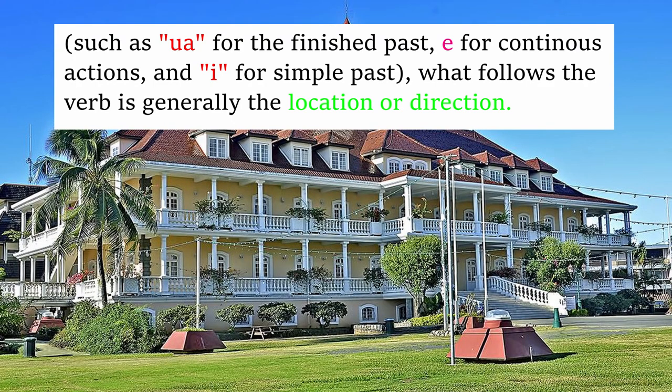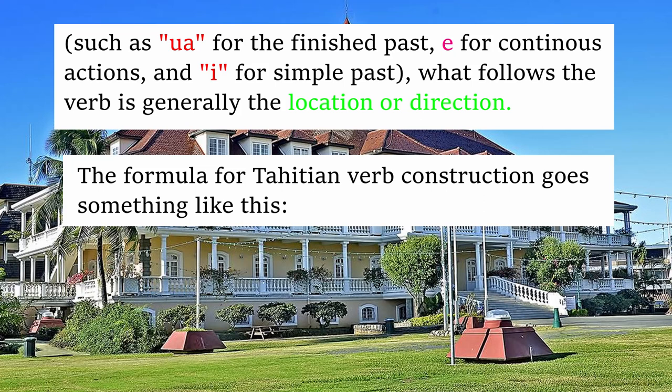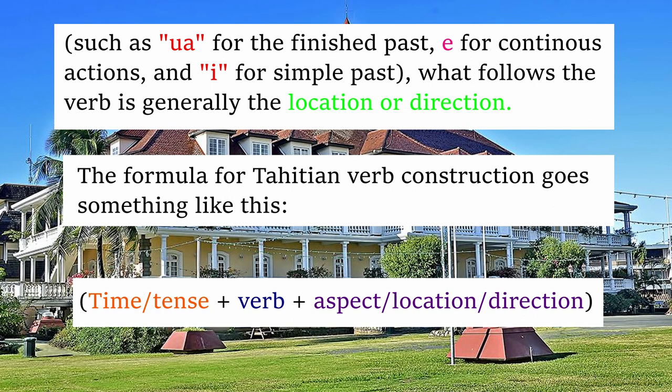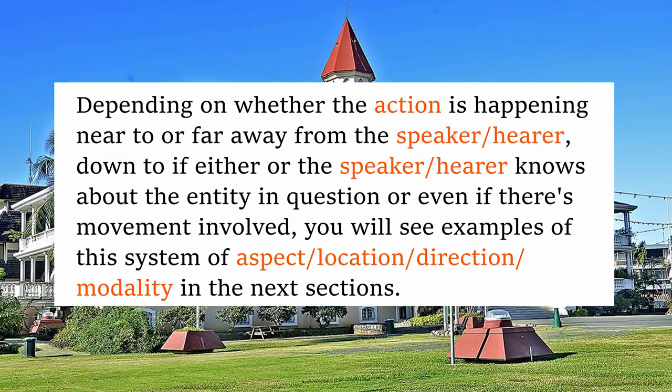Verbs. There are no verb conjugations in Tahitian, like most Polynesian languages. However, verbs are very complex because they require aspect, tense, and modality markers to be added to the front or after the verb. The tense is typically added before the verb, such as ua for the finished past, e for continuous actions, and i for simple past. What follows the verb is generally the location or direction. The formula for Tahitian verb construction goes: tense/aspect first, followed by the verb, which is followed by the aspect, location, or direction marker, depending on whether the action is happening near or far from the hearer or speaker.